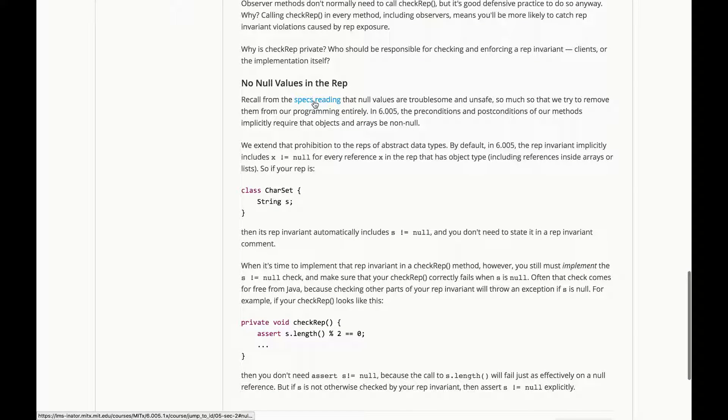Now, recall from our specs reading that null values are troublesome and unsafe, so much so that we try to remove them from our programming entirely. In 6005, the preconditions and postconditions of our methods implicitly require that objects and arrays be non-null. We don't have to say that. We just don't want null. So we should extend that prohibition to the reps of abstract data types.